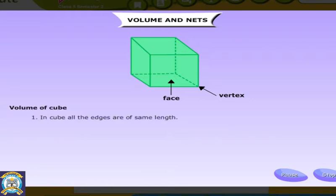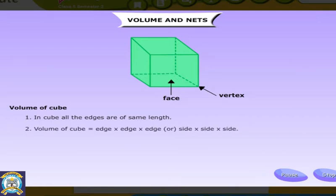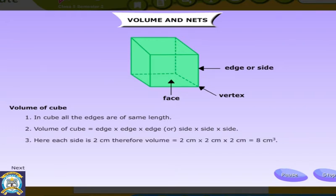Volume of Cube. In cube all the edges are of same length. Volume of cube is equal to edge into edge into edge or side into side into side. Here each side is 2 cm, therefore volume is equal to 2 cm into 2 cm into 2 cm, that's equal to 8 cm cube.